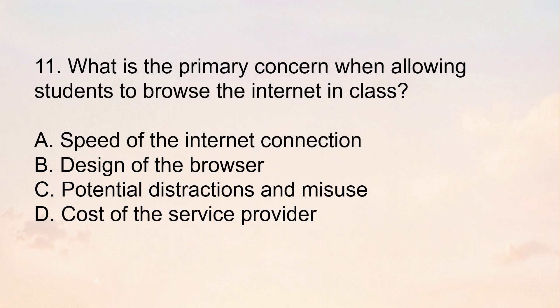Number 11: What is the primary concern when allowing students to browse the internet in class? Letter A, speed of the internet connection. Letter B, design of the browser. Letter C, potential distractions and misuse. Or Letter D, cost of the service provider.